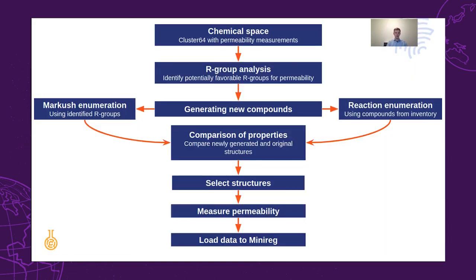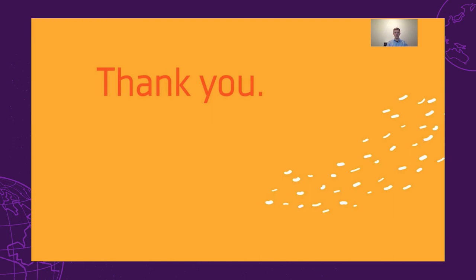To summarize the presentation, we used IGC and Plexus Connect for a hypothetical compound design workflow. In this workflow, we started with an initial chemical space, which we analyzed using R-group analysis, and used the results to generate new compounds via Markush and reaction enumerations. We compared the resulting structures and selected some promising ones for synthesis by our lab and CROs. After the hypothetical synthesis and permeability measurements, the compounds were registered in MiniReg, along with associated assay data. I hope you enjoyed the presentation, and thank you for your attention.